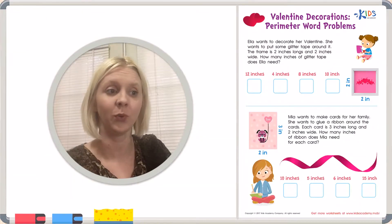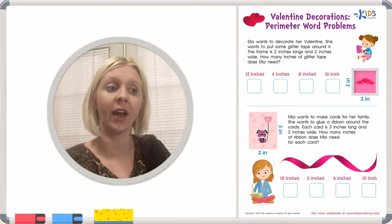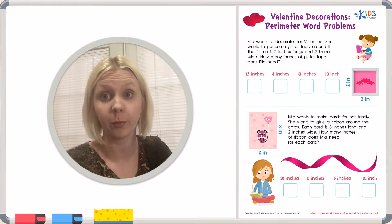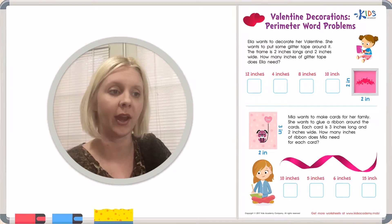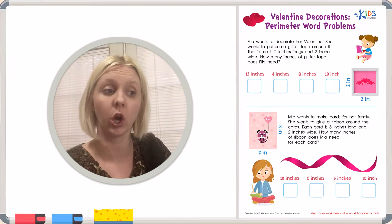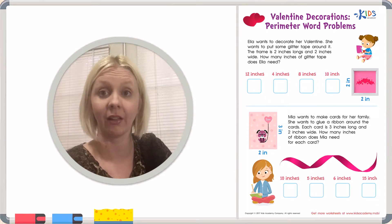Today we have a new worksheet called Valentine Decorations Perimeter Word Problem. So let's take a look at our directions here. The word problem says that Ella wants to decorate her valentine. She wants to put some glitter tape around it. The valentine is 2 inches long and 2 inches wide. How many inches of glitter tape does Ella need?